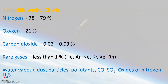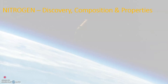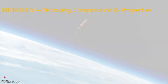Let us learn about the most abundant component present in the air, which is nitrogen gas. In the year 1772, a scientist named Daniel Rutherford discovered nitrogen gas. Later, in the year 1775, Antoine Lavoisier is the scientist who named nitrogen gas.